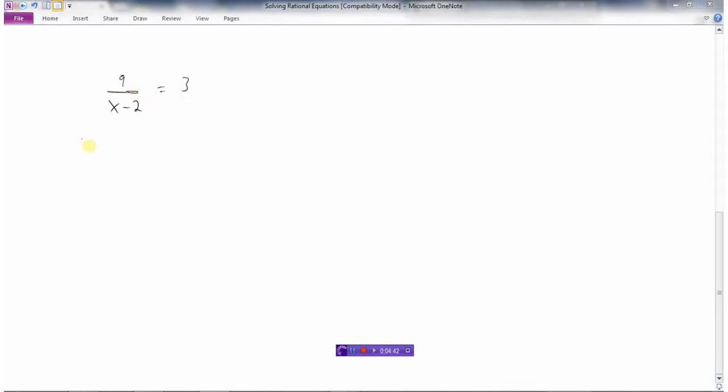The first thing I want to do is find out what are the non-permissible values. When we look at this one, we see x cannot equal 2, because we'd be dividing by 0.